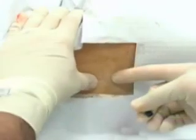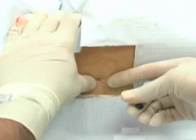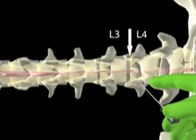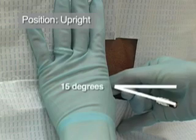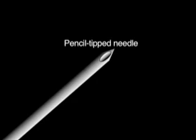Identify the anatomical landmarks once again and insert the needle. With the stylet firmly in place, insert in the midline at the superior aspect of the inferior spinous process, directing it at an angle of approximately 15 degrees, as if aiming at the patient's umbilicus. Either use a pencil tip needle or ensure that the bevel of the needle is in the sagittal plane in order to spread rather than cut the fibers of the dural sac. These fibers run parallel to the spinal axis, and this needle position should theoretically decrease the leakage of cerebrospinal fluid.